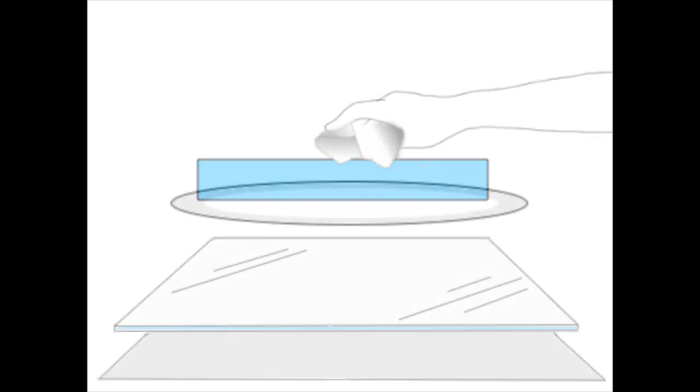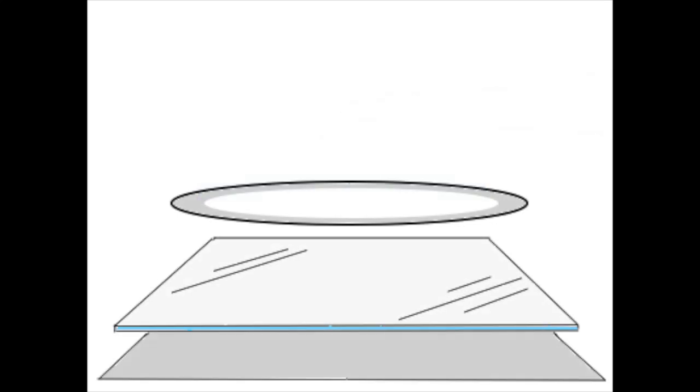Briskly rub the acrylic with a dry paper towel and then place the pizza pan directly on top of it. Moisten the bottom edge of a toilet plunger and press the plunger onto the pizza pan so that it forms a partial vacuum and remains attached.